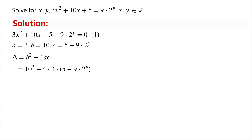So we can now write the discriminant equals 40 plus 4 times 3 times 9 times 2 to the power of y. The two terms have a common factor 4, so they can be written as 4 times (10 plus 27 times 2 to the power of y).